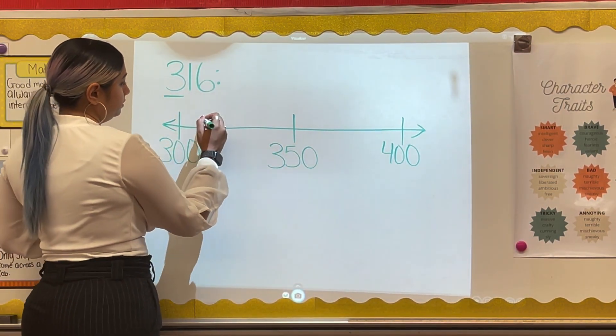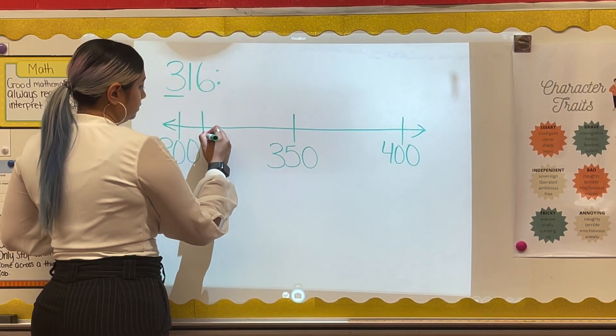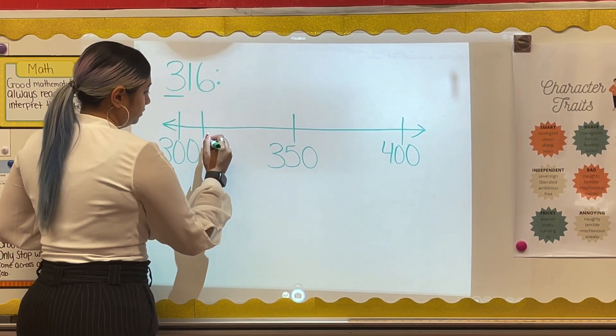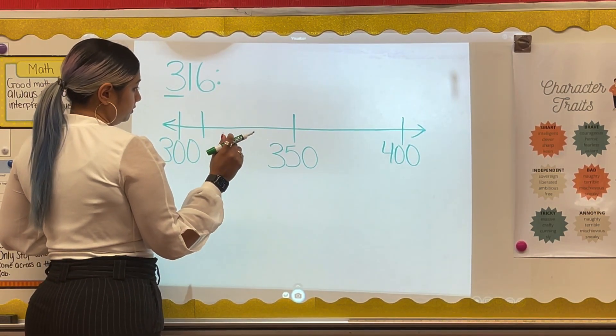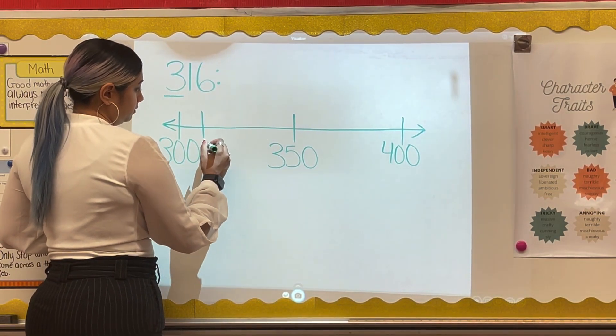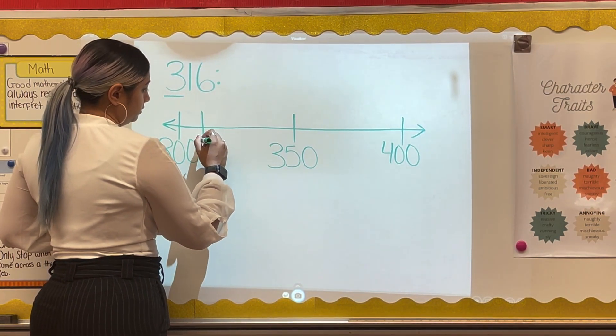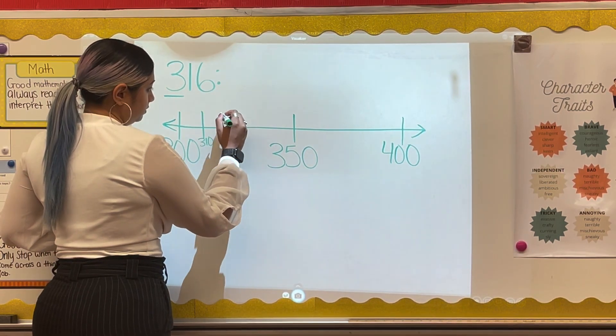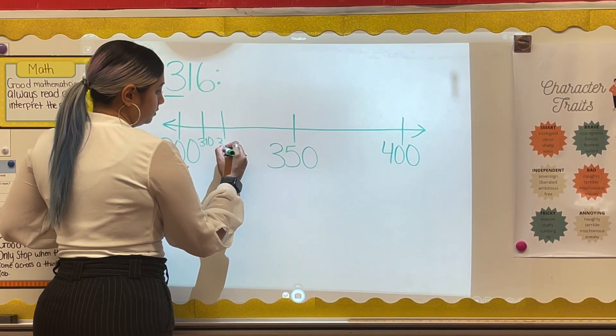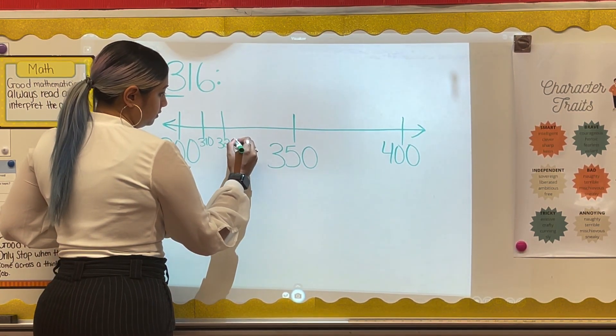Next, I'm going to draw 10 tick marks between the two numbers to represent the distance between those two numbers counting by 10s. We count by 10s to save time.